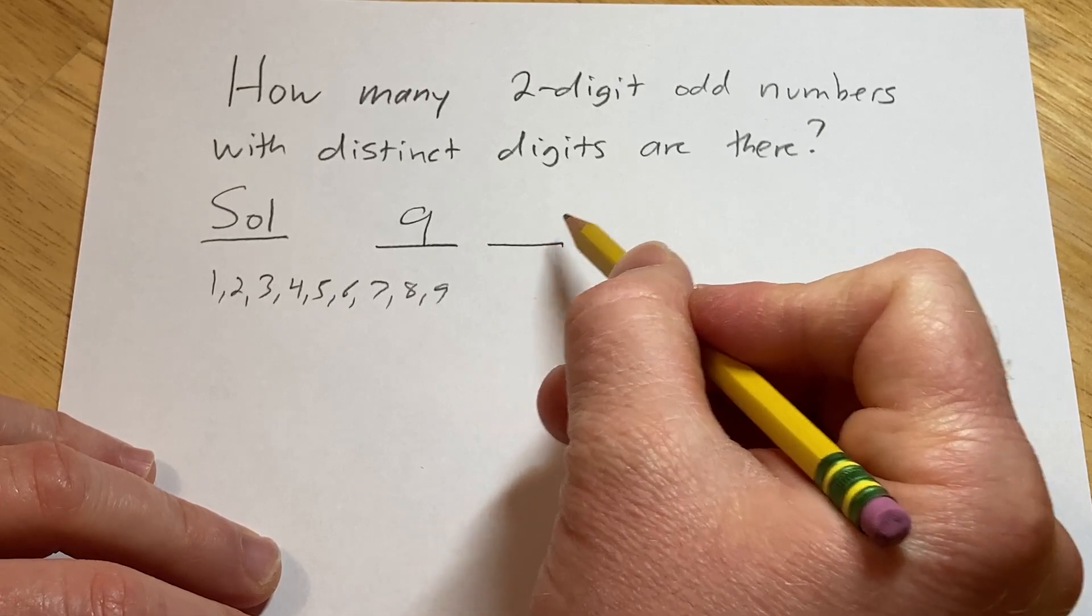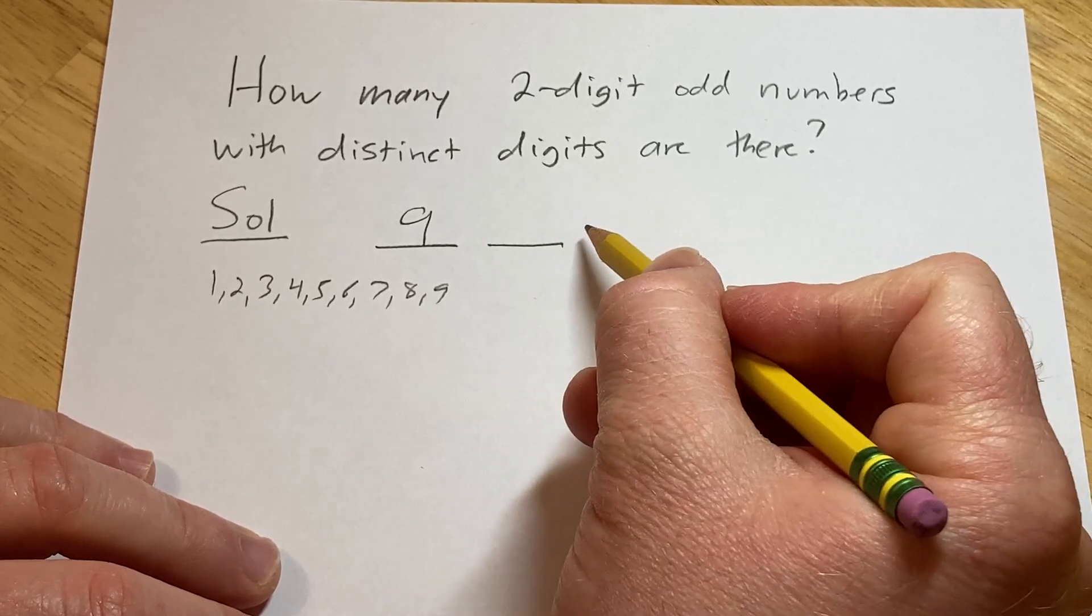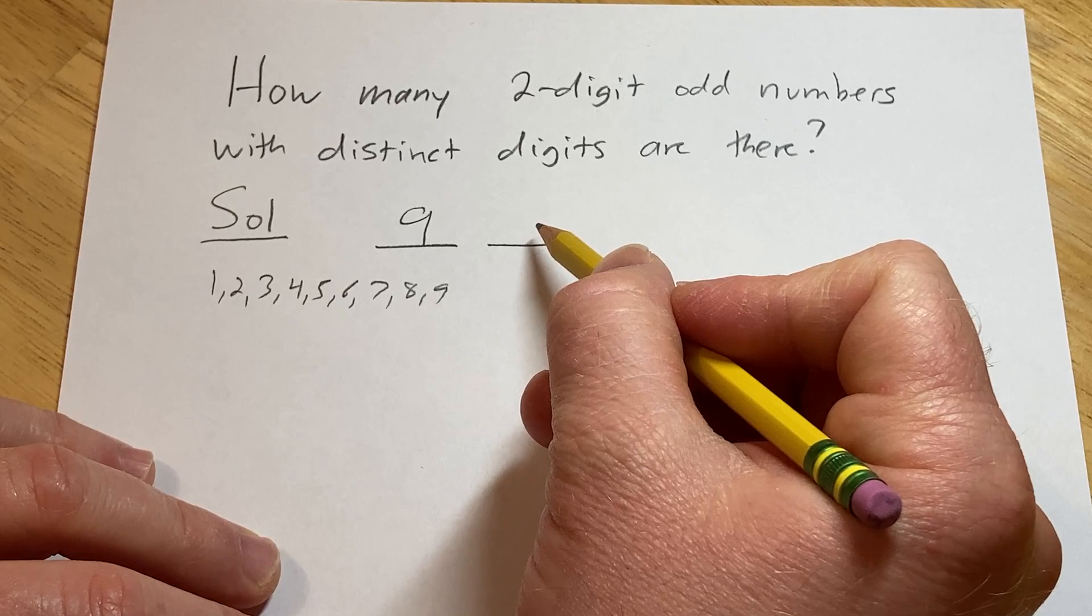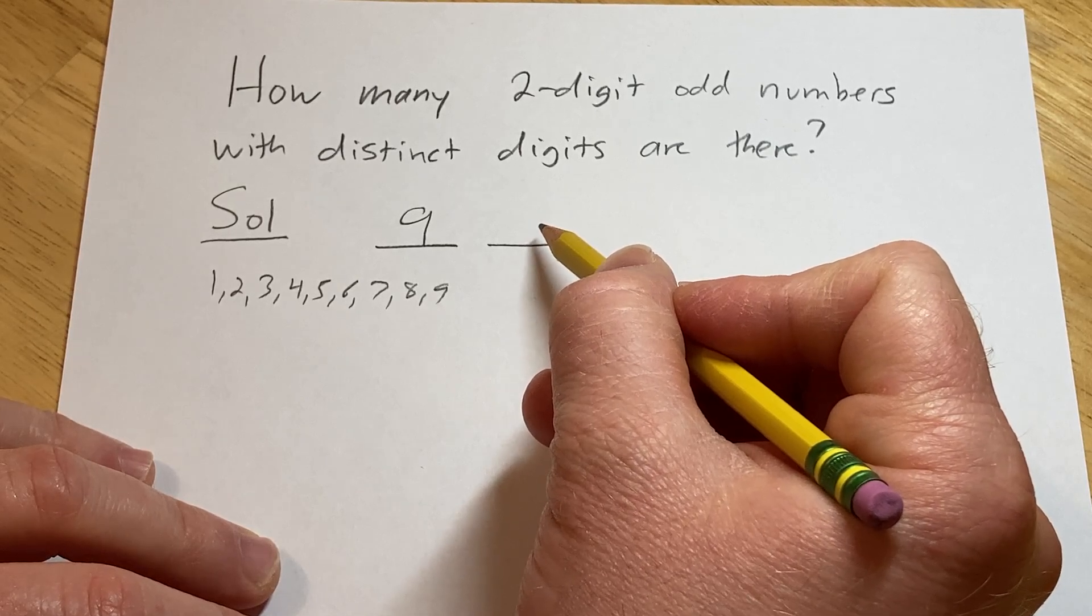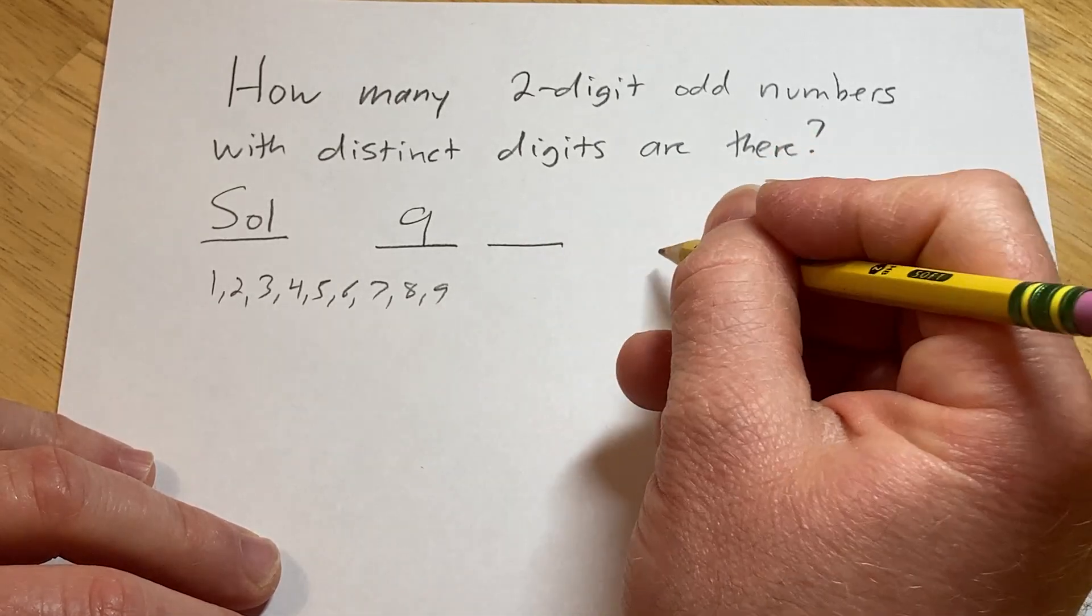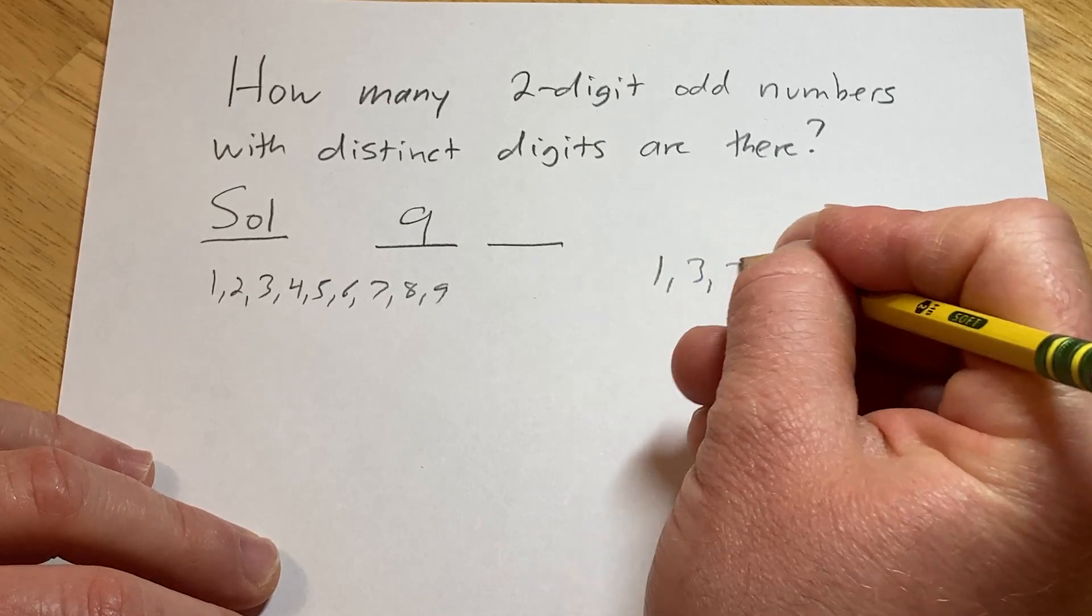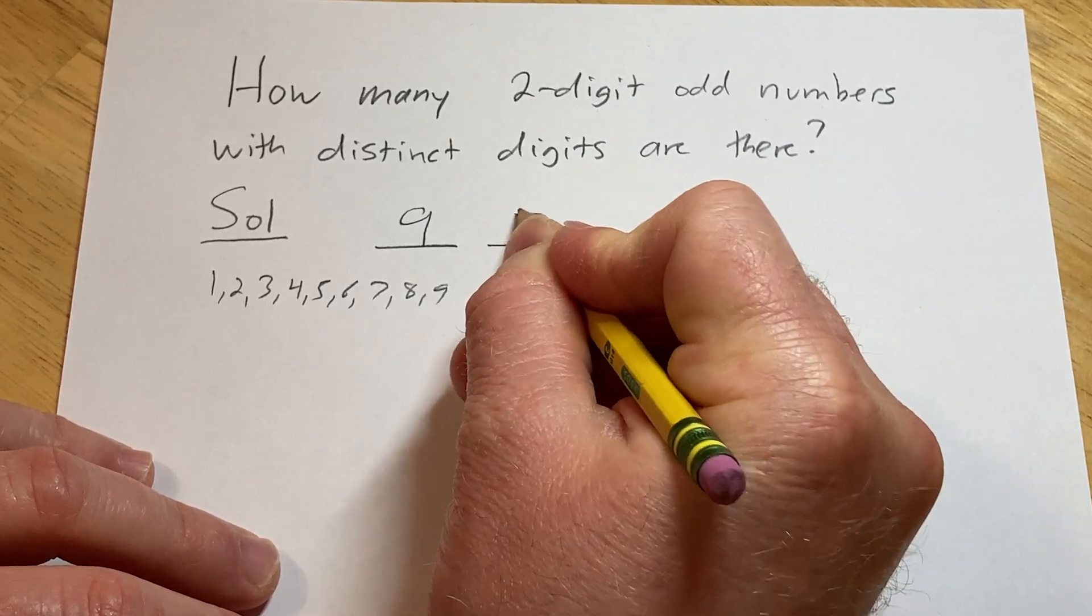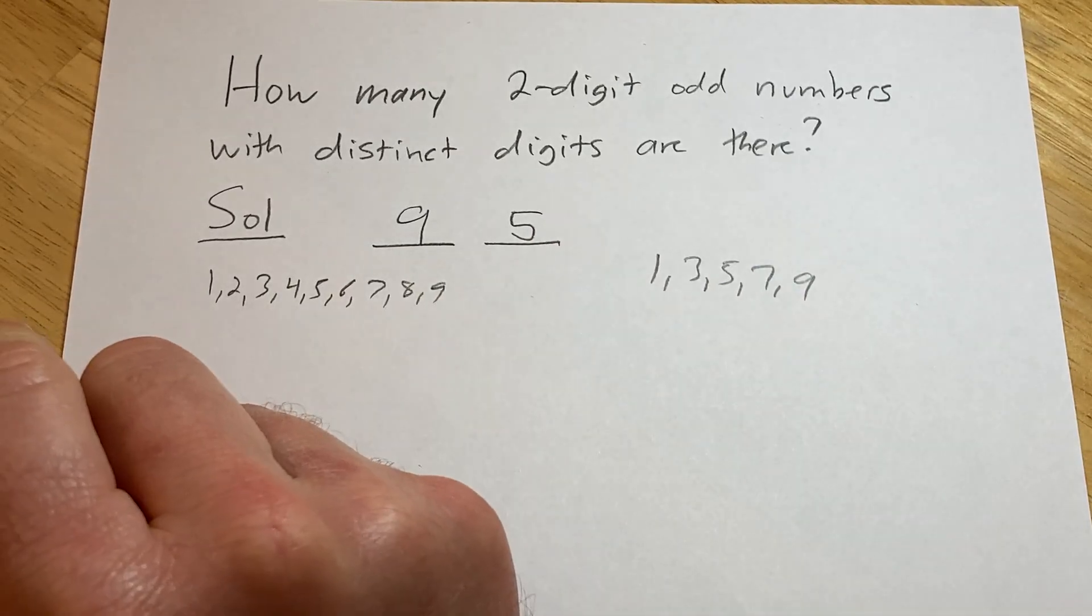And if you want the number to be odd, that means it can't be even. So even numbers end in 0, 2, 4, 6, or 8. So the odd numbers have to end in 1, 3, 5, 7, or 9. So there are five choices for the second digit.